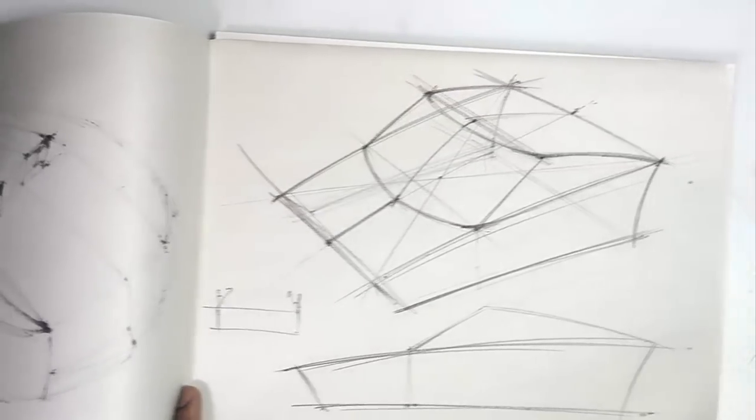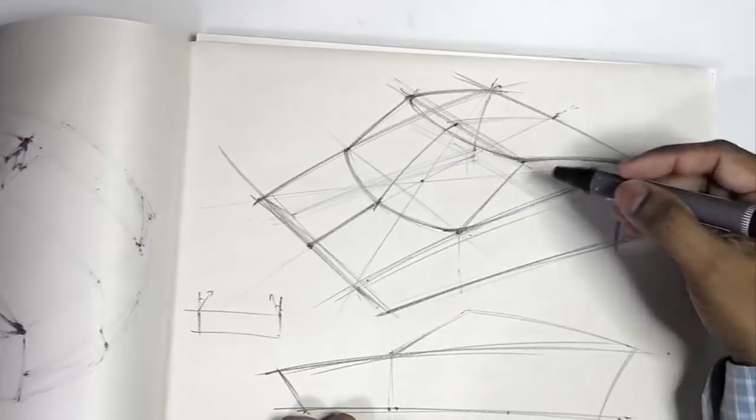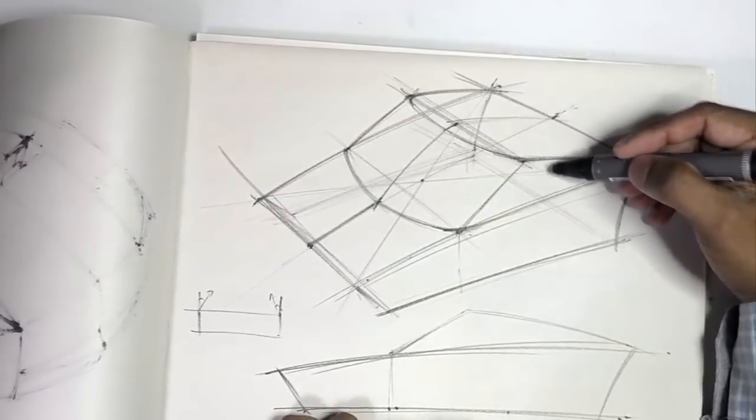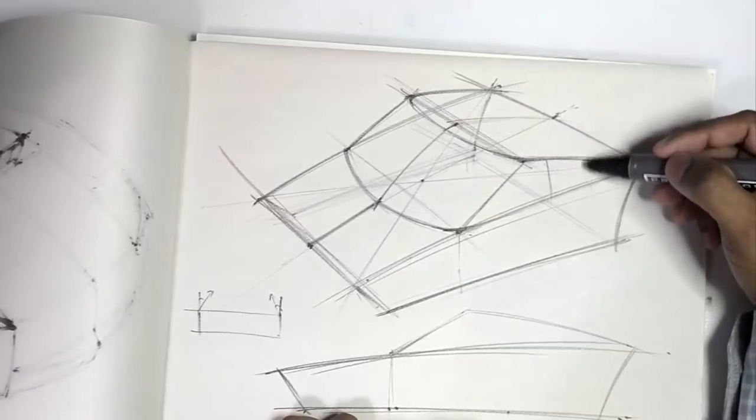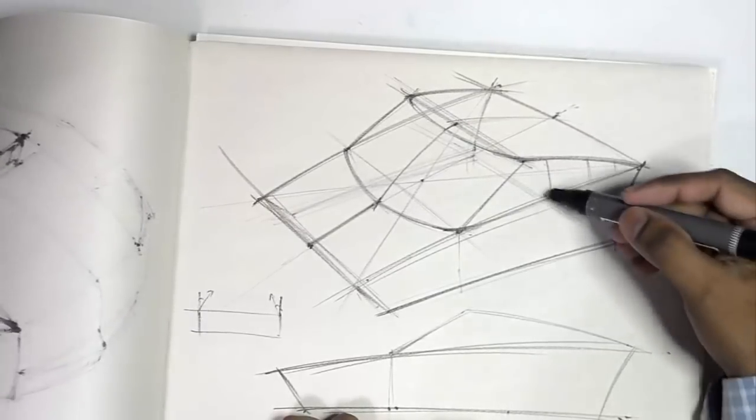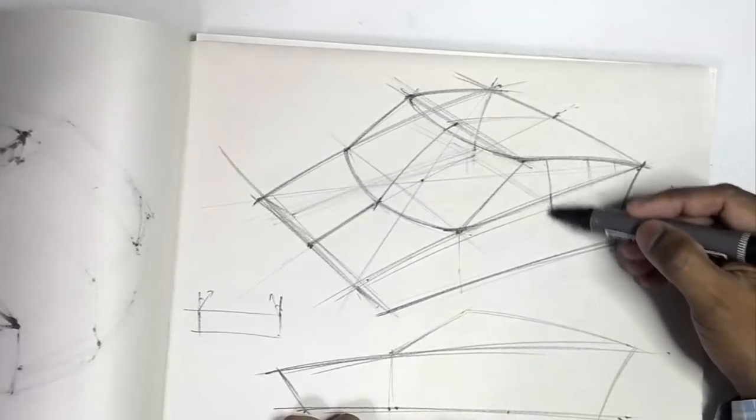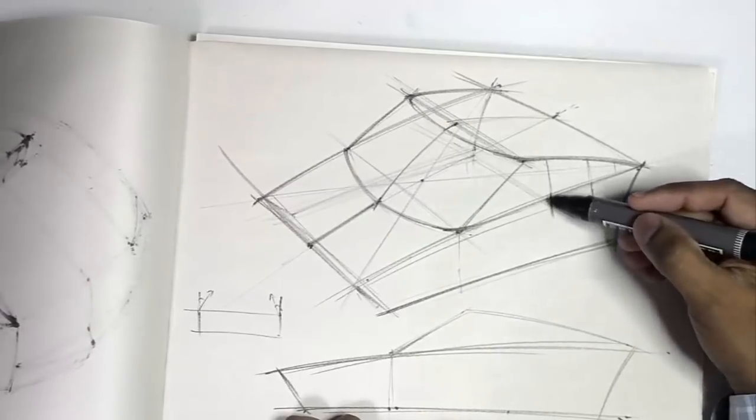And then you can do anything you want from this point. You can add a section through this area and say that, well, this has got a slight crown to it. This has got a slight crown to it. And you describe every section. And then when you come to this area, you can say, well, there's a little bit of a chamfer here.